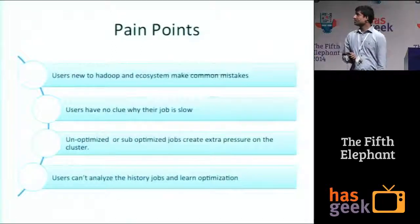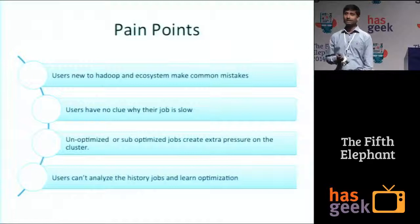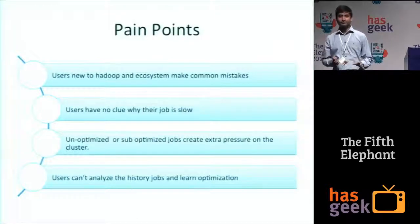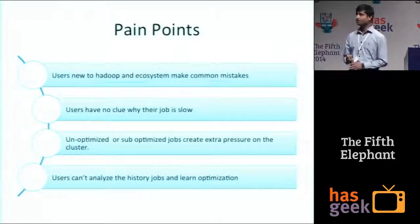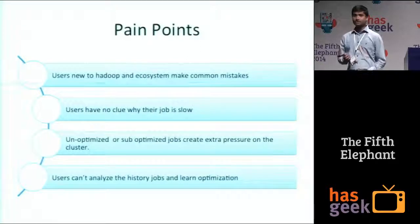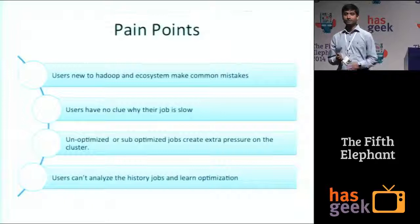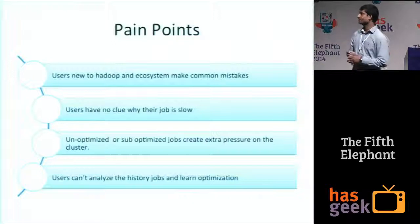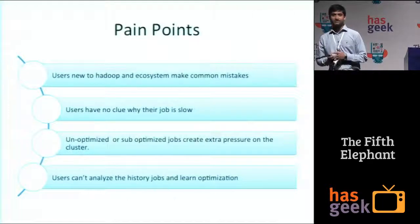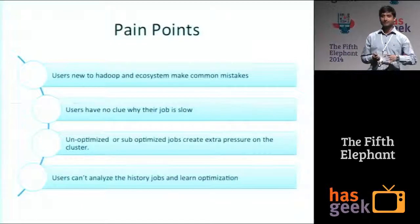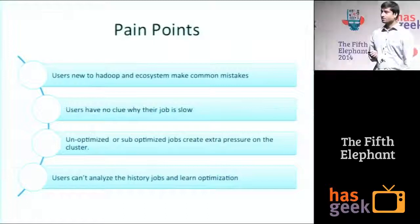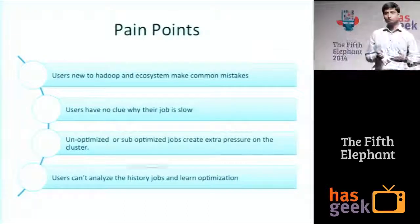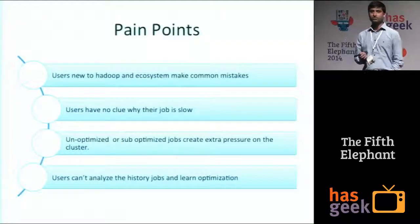The real pain point is that people who are new beginners, when they write MapReduce jobs, Hive queries, and other things, they really make common mistakes. I have worked in the performance engineering team — people make common mistakes like not enabling compression, for example. They have no clue why their job is slow because they don't know the best practices for writing MapReduce jobs. Apart from this, these unoptimized or suboptimized jobs actually create extra pressure on your cluster in multi-tenant Hadoop deployments. People also don't learn the optimizations and don't know what information Hadoop already provides.